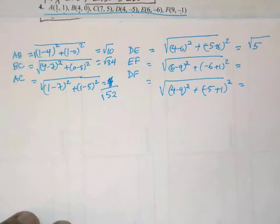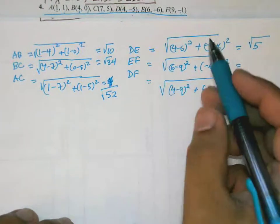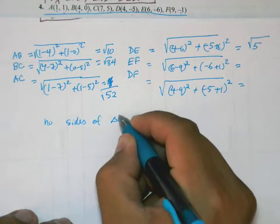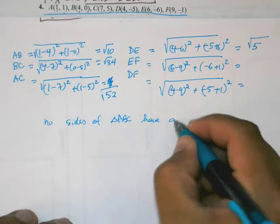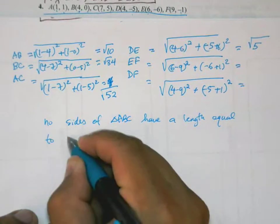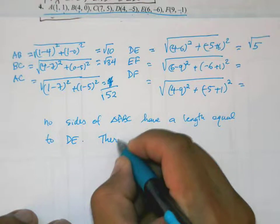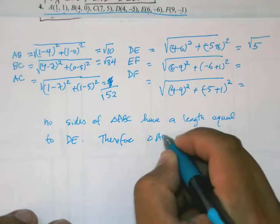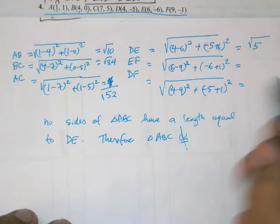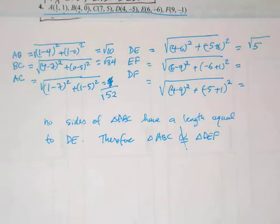So I can say that no sides of triangle ABC have a length equal to DE. Therefore, triangle ABC is not congruent to triangle DEF. This is an example of a case when two triangles are not congruent to each other.